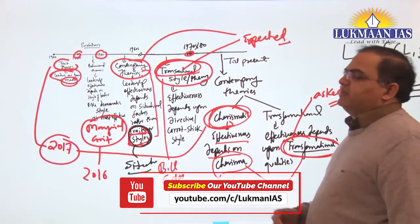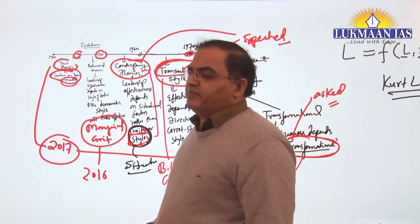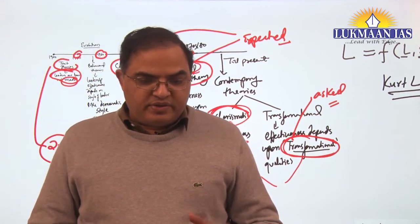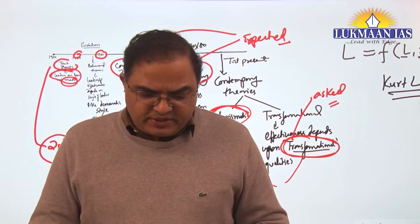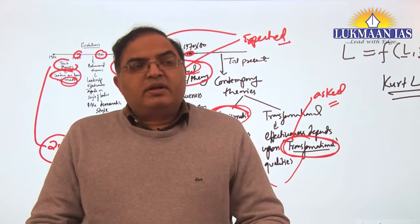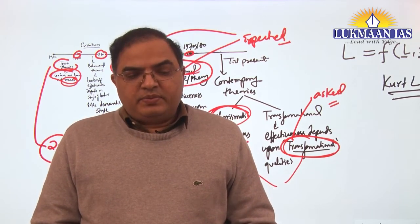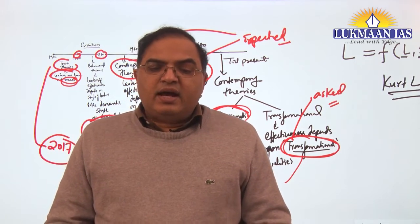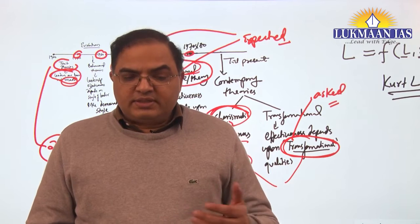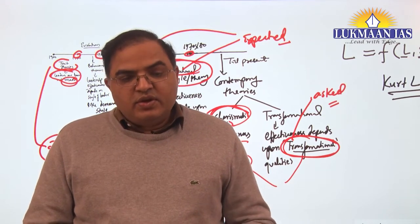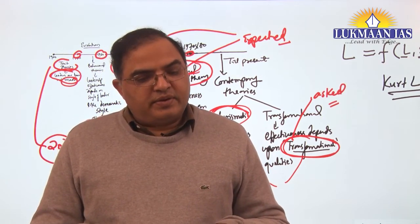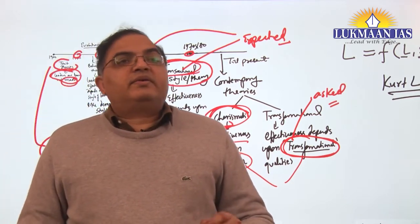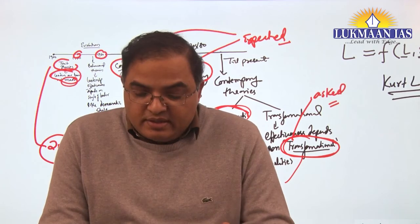We'll explain one by one in details. Leadership theories are concerned about leadership effectiveness. Their main concern is which leader is effective for the organization on the basis of their studies conducted. There are already some behavioral theories that we have told. So they can conduct their studies, their research, analysis. And they will also study some successful leaders, and on the basis of that, that is how they have given.